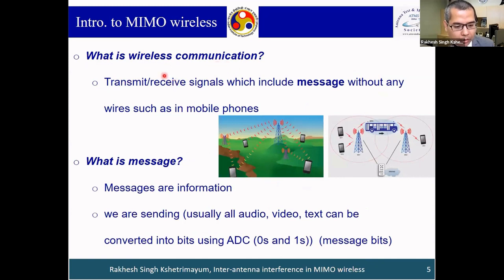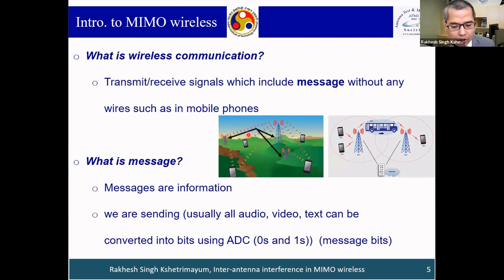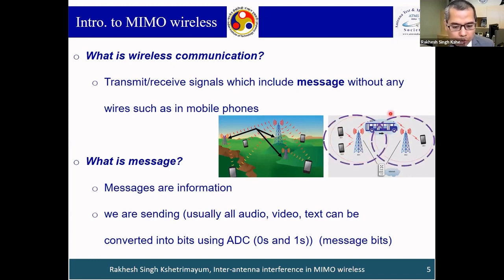Wireless communication means you transmit and receive signals, including messages, without any wires — such as in mobile phones. This diagram shows base stations communicating with mobile phones. All base stations cover one area shown by circles. When we move from one base station to another, there will be a mobile handoff. In this talk, message means message bits — all audio, video, and text can be converted into bits using analog-to-digital converters, so all messages here means zeros and ones.